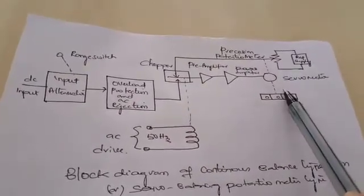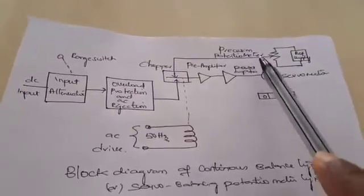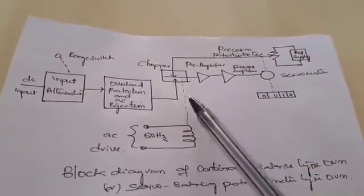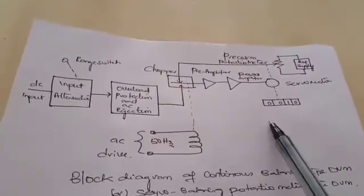This servo motor is also called a position control motor. It controls the potentiometer arm in such a way that both the voltages become zero, and finally the value to be measured is displayed in the digital readout.